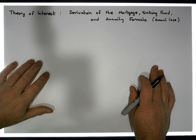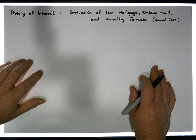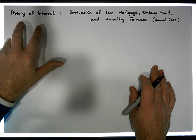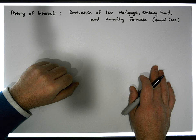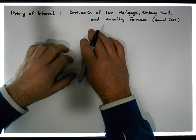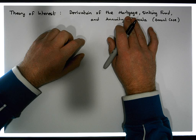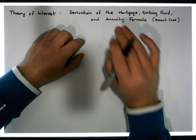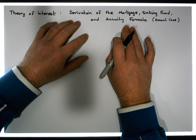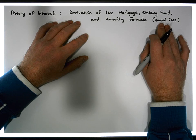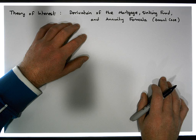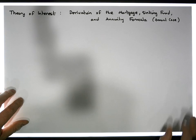Hi guys, this is Jonathan Lambert with the Mathematics Development and Support Service at the National College of Ireland. This short video, another in our series dealing with the theory of interest, is going to attempt to derive a formula that allows us to calculate mortgages, sinking funds and annuities. The derivation is going to be based off a simple case from an annual perspective with respect to the application of interest.